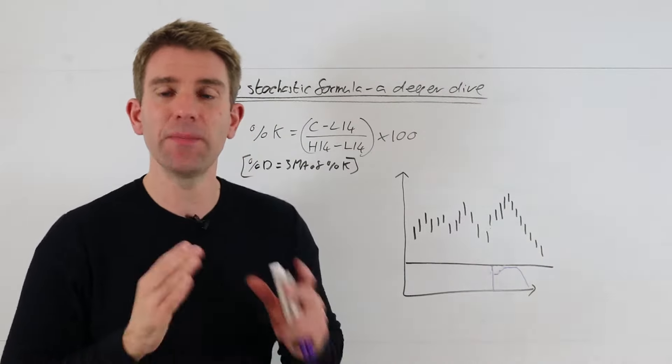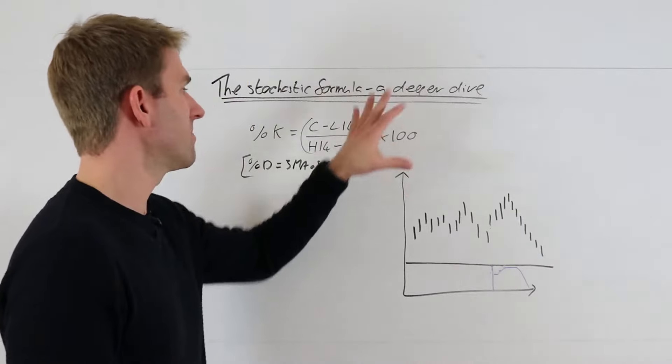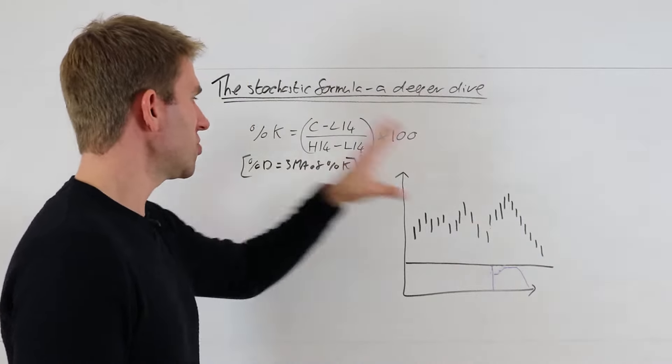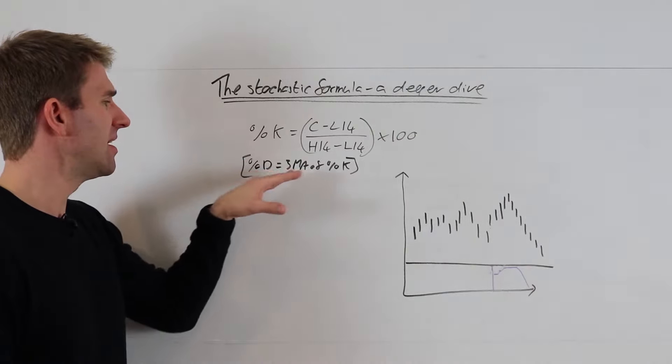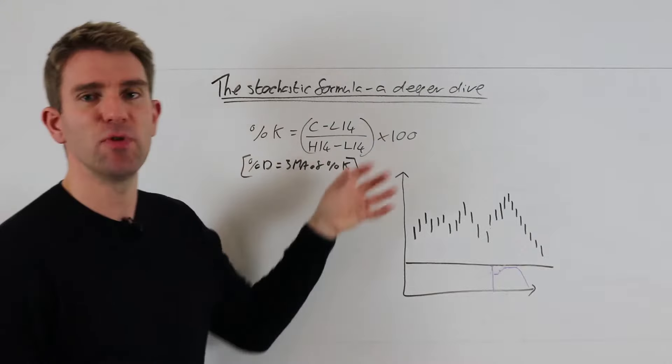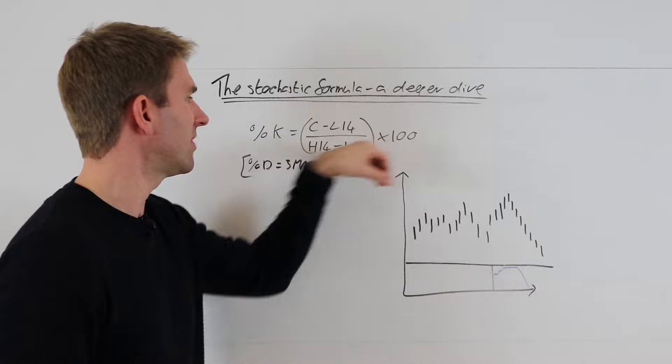That's times by 100. That times by 100 is just as a point of reference. The percentage D is a three period moving average of the percentage K. Whatever setting you've got, this is the important thing that's influencing things.